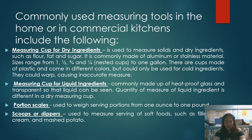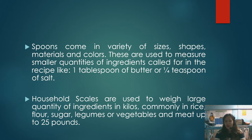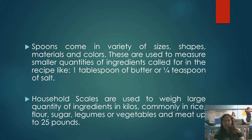The measuring cup for liquid ingredients is commonly made of heat-proof glass and is transparent so that the liquid can be seen. Portion scales are used to weigh serving portions from one ounce to one pound. Scoops or dippers are used to measure servings of soft foods such as filling, cream, and mashed potato. Measuring spoons come in a variety of sizes and are used to measure smaller quantities of ingredients such as one tablespoon of butter or one-fourth teaspoon of salt. Household scales are used to weigh large quantities in kilos, up to 25 pounds.